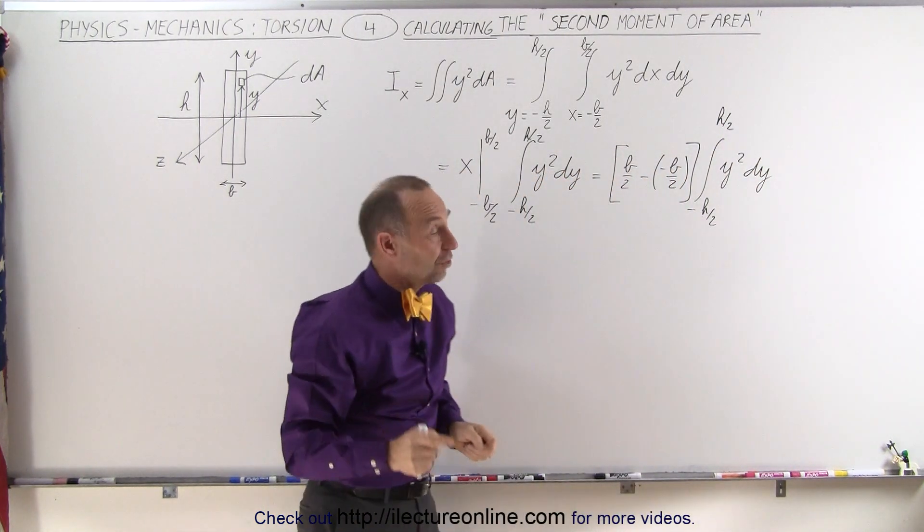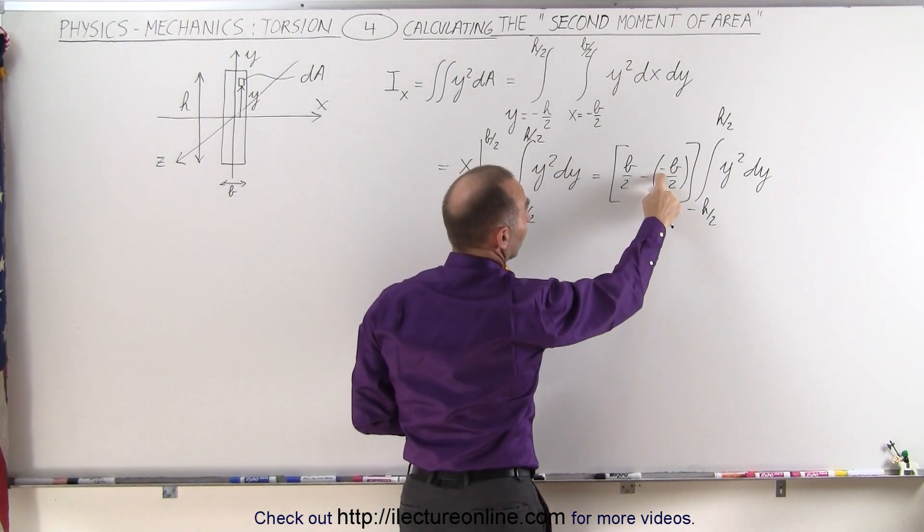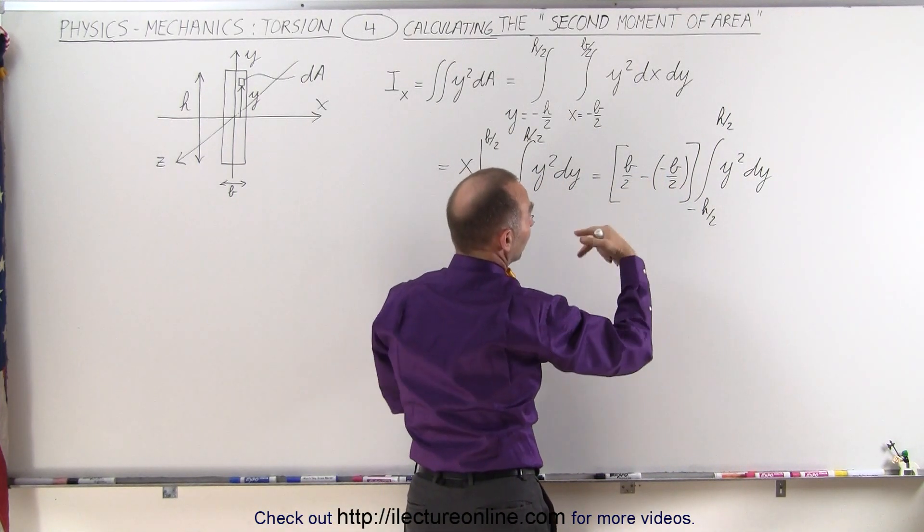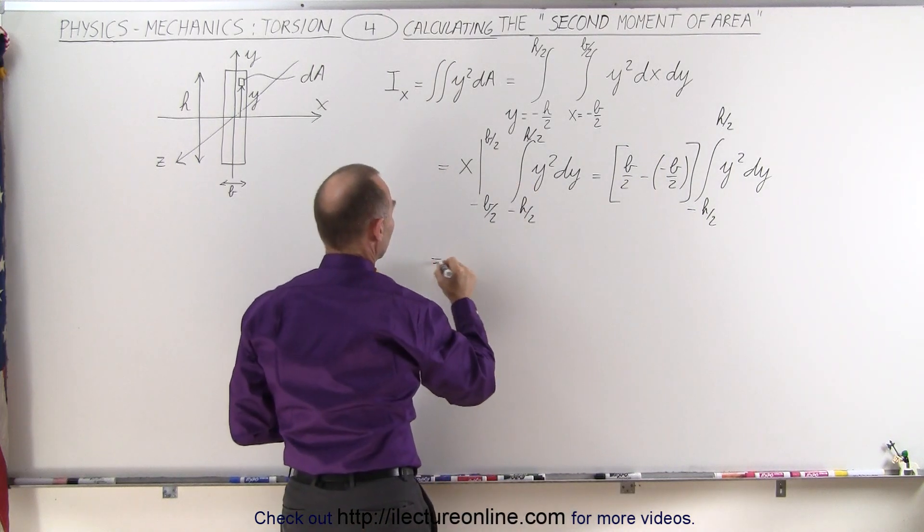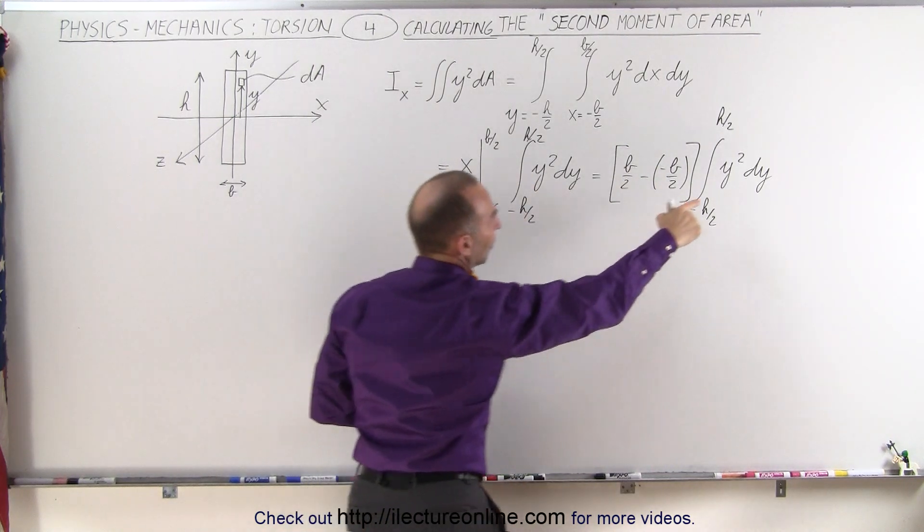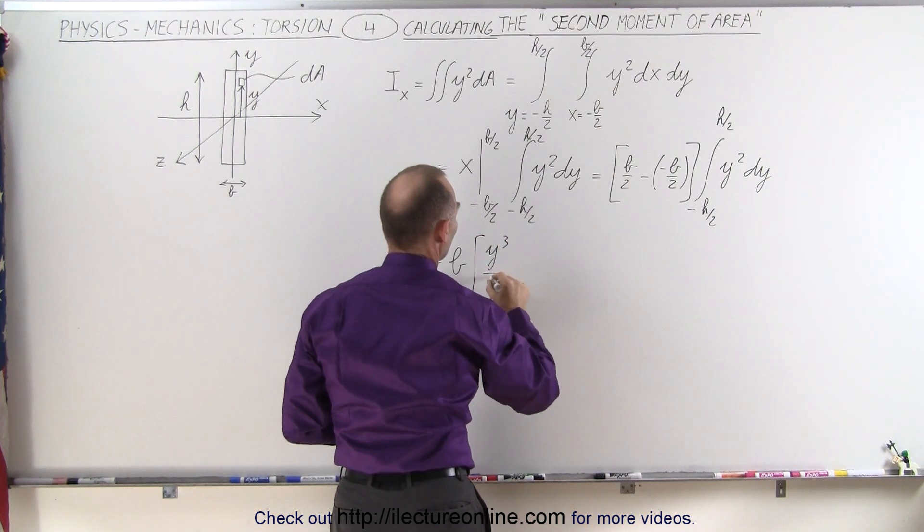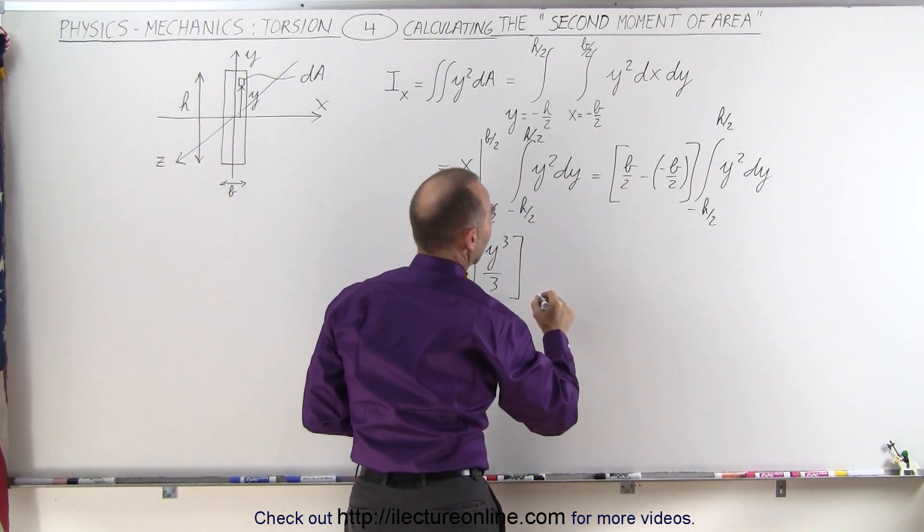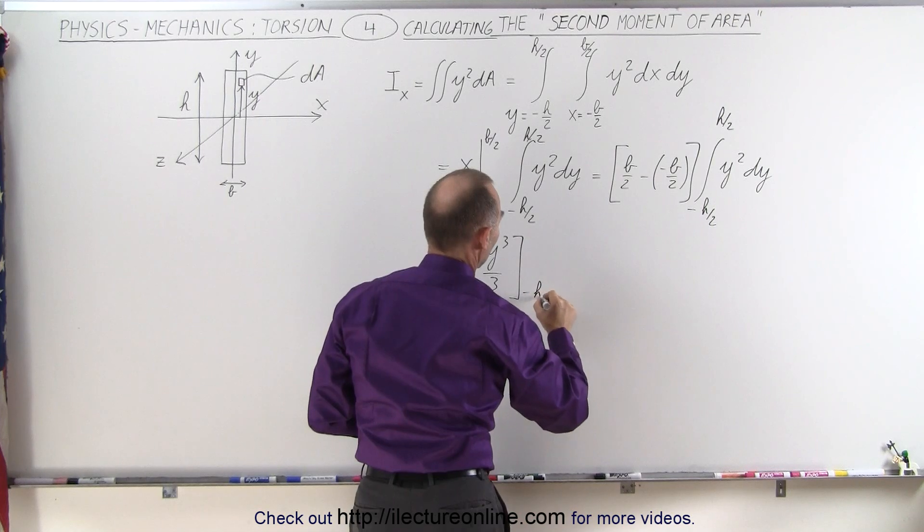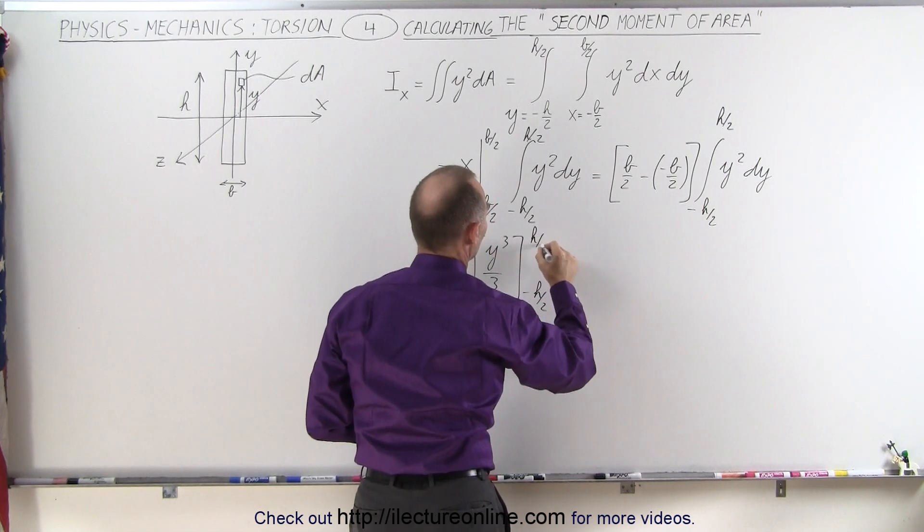Of course, here you can see that when the negative cancels out the negative, so we have b over 2 plus b over 2, which is simply b. So this becomes equal to b times this integral, which will be y-cubed over 3, evaluated from minus h over 2 to plus h over 2.